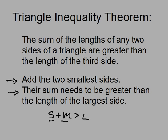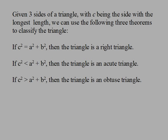What I'm going to use next is an offshoot of the Pythagorean theorem. Given three sides of a triangle, with C being the side with the longest length, we can use three theorems to classify the triangle — assuming we've already confirmed the lengths form a triangle. If C squared equals A squared plus B squared, it's a right triangle. If C squared is less than A squared plus B squared, it's acute. And if C squared is greater than A squared plus B squared, the triangle is obtuse.